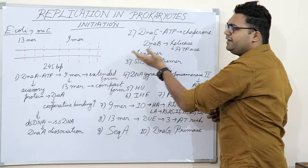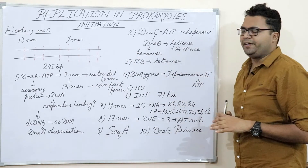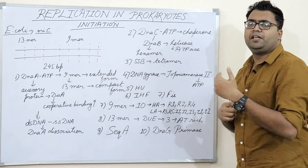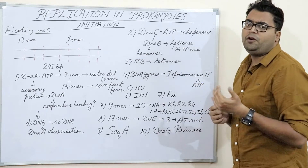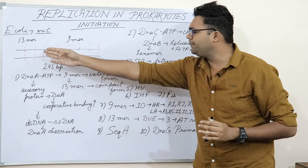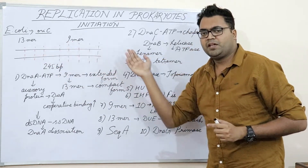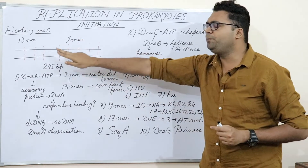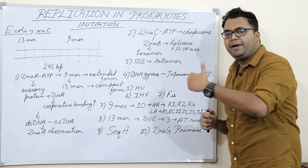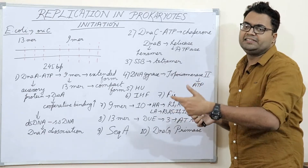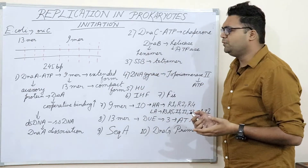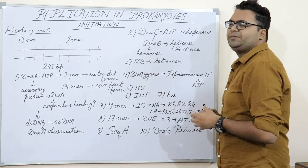Since hydrogen bonds require only 5 to 10 kilojoules per mole of energy, there could be a renaturation occurring behind DnaB. The AT bonds broken by DnaB could re-form, wasting the ATP used to break each hydrogen bond. The cell does not waste ATP, so it has a solution.